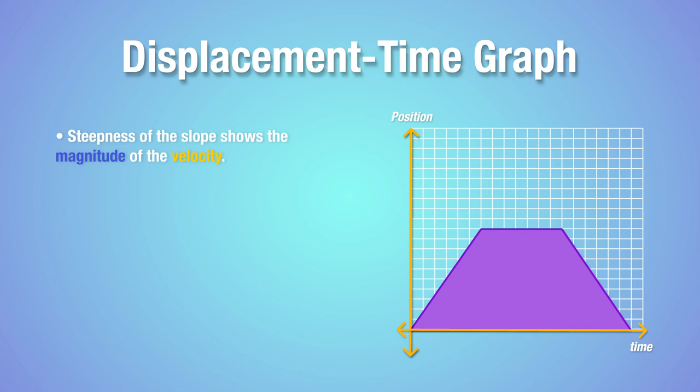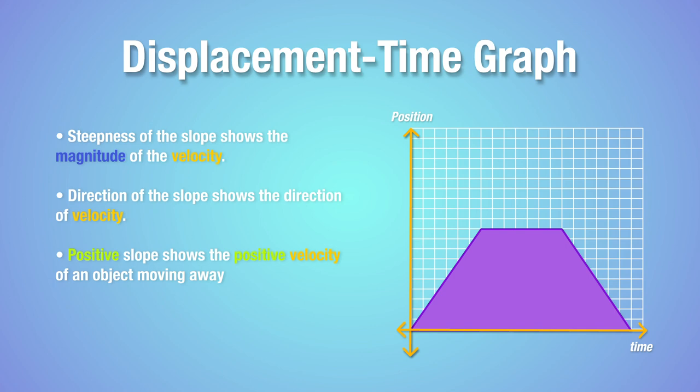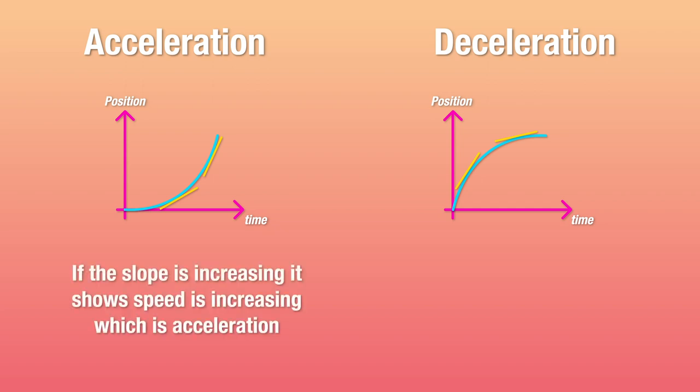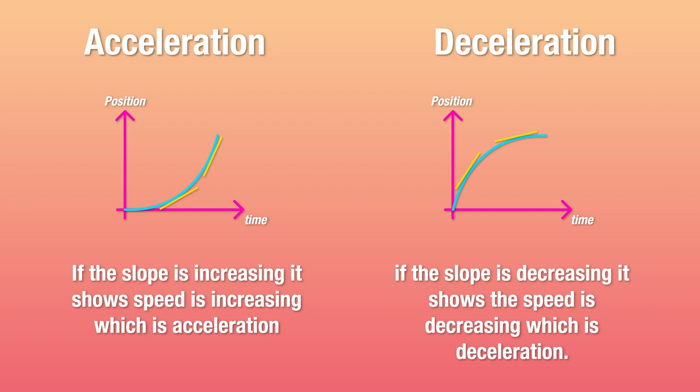Similarly, the positivity or negativity of the slope represents the direction of the velocity. Meaning, a positive slope shows a positive velocity, which means the object is moving away from the reference point. And a negative slope shows the negative velocity, which means the object is moving towards the reference point. Now, just like distance time graphs, the displacement time graph also shows acceleration through curves. Curves with increasing slopes show increasing velocity and therefore acceleration. And curves with decreasing slopes show decreasing velocity and therefore deceleration.